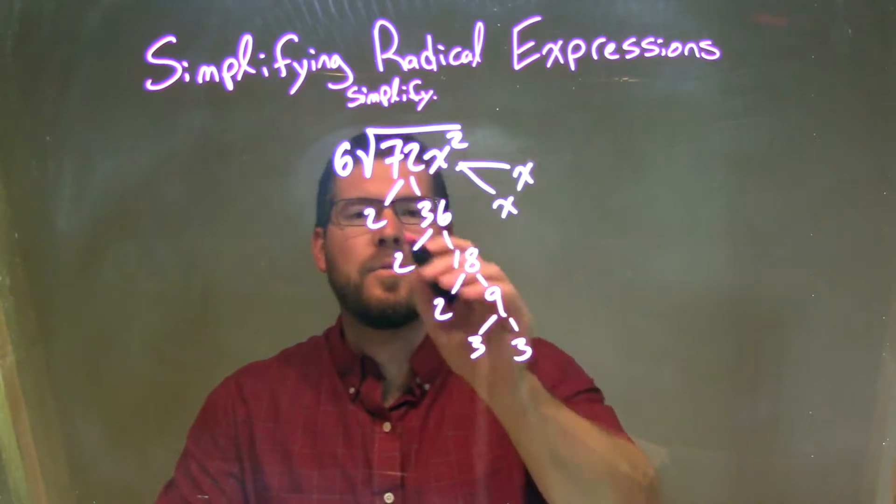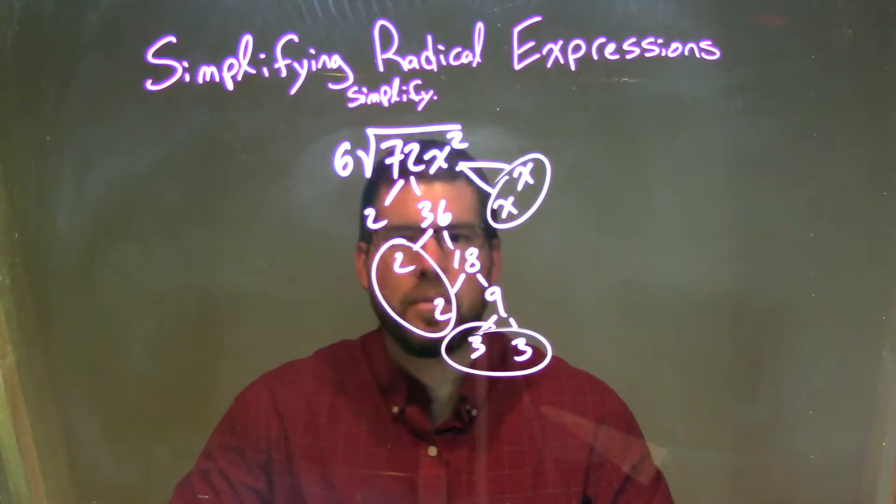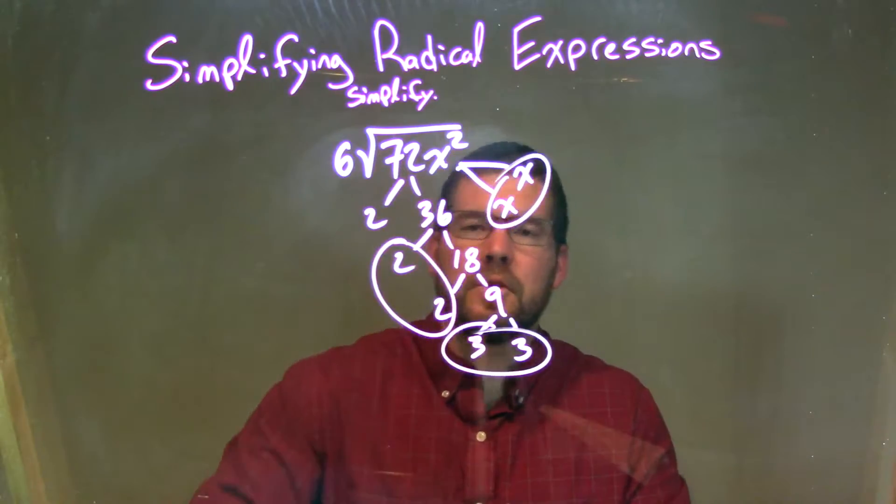So now let's go circle our pairs. We have a pair of 2s right here, and we have a pair of 3s, and we have a pair of xs. We have this one 2 that is a lone ranger.